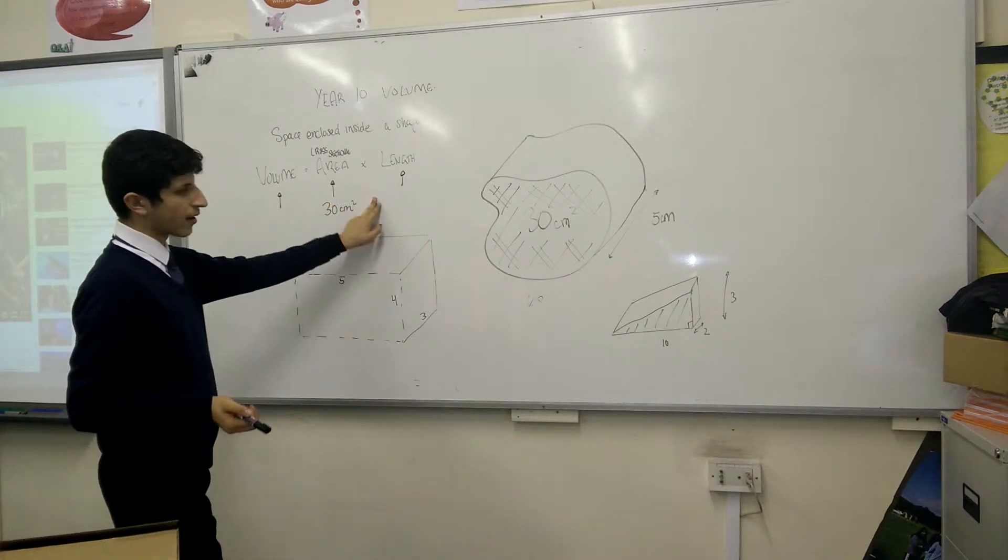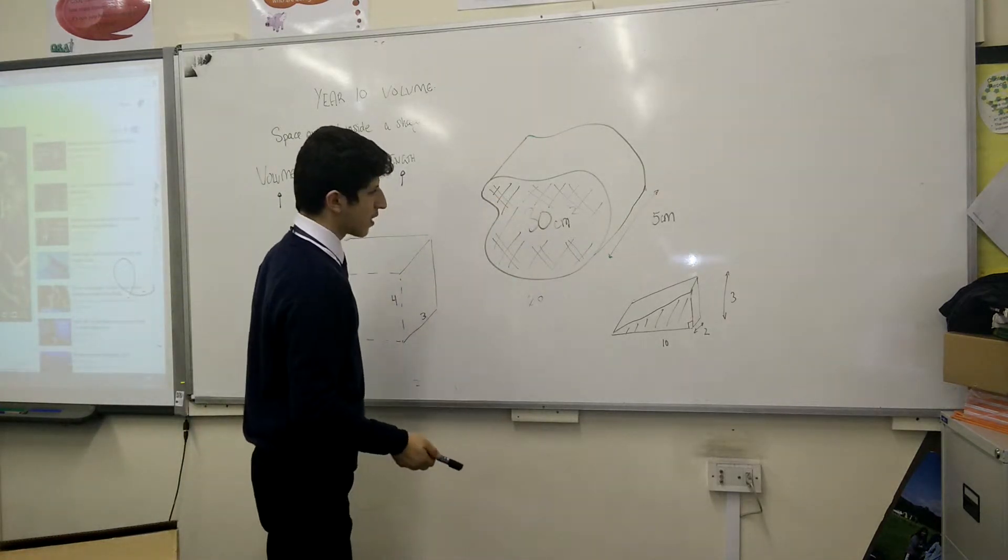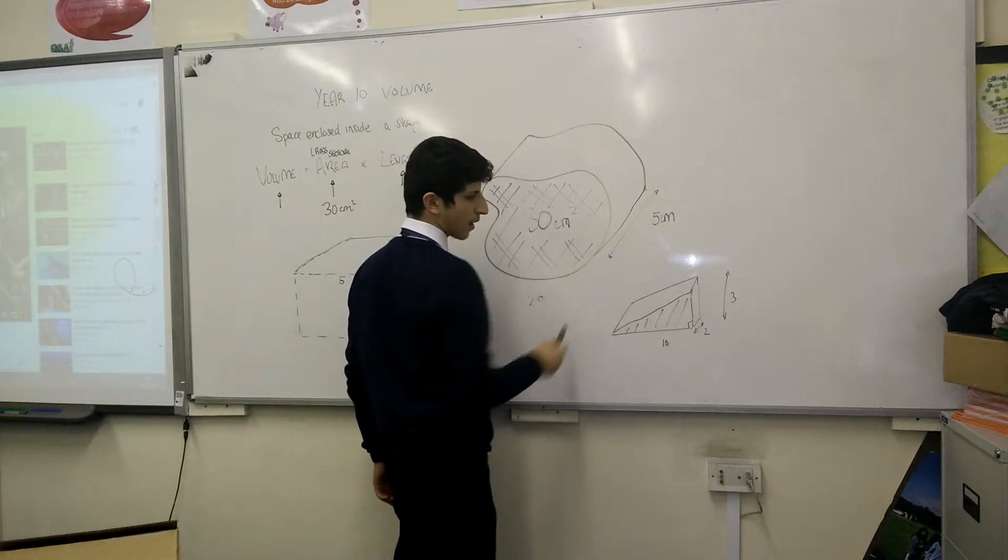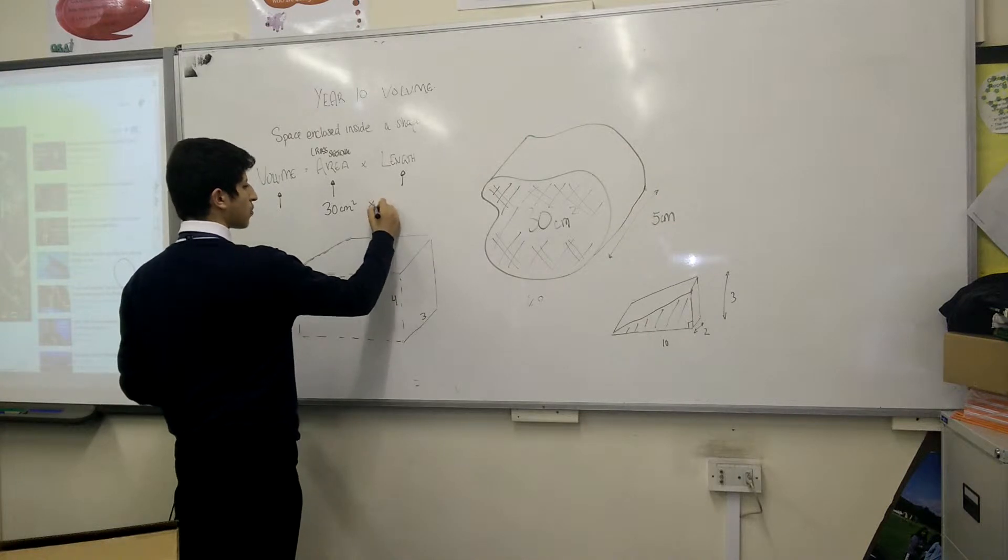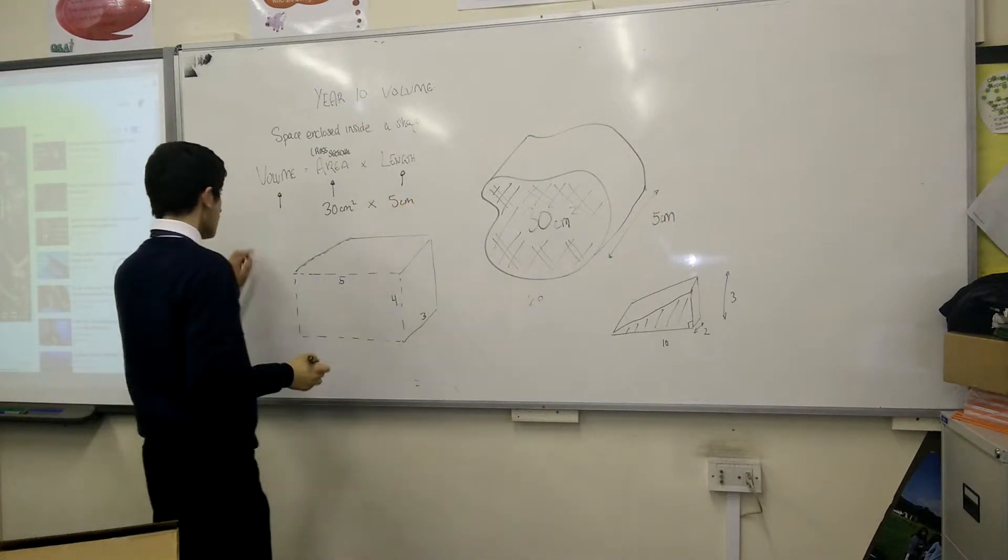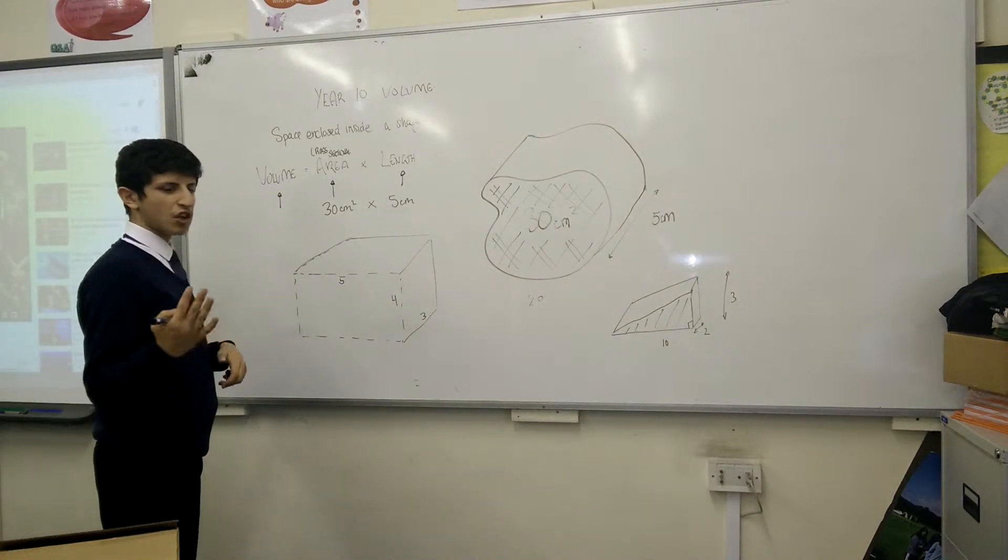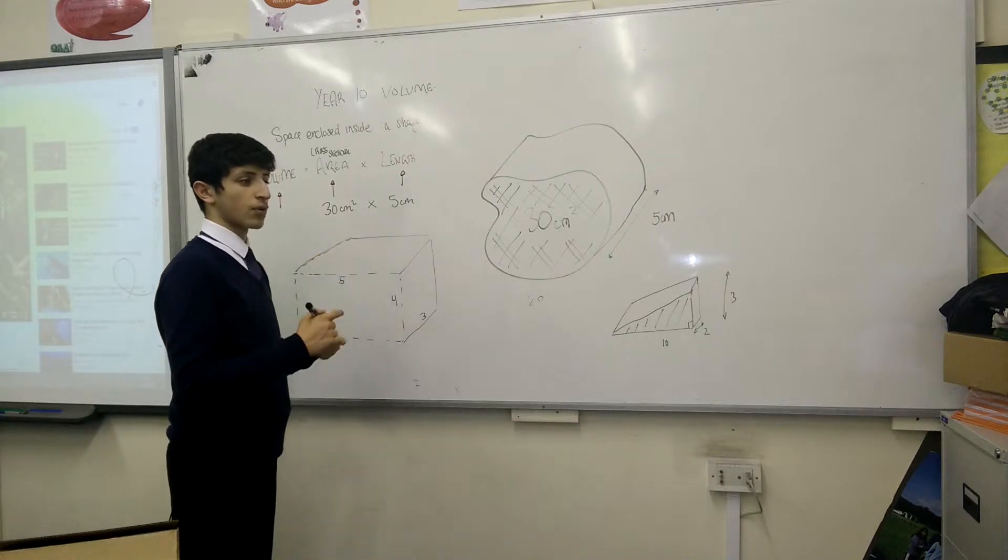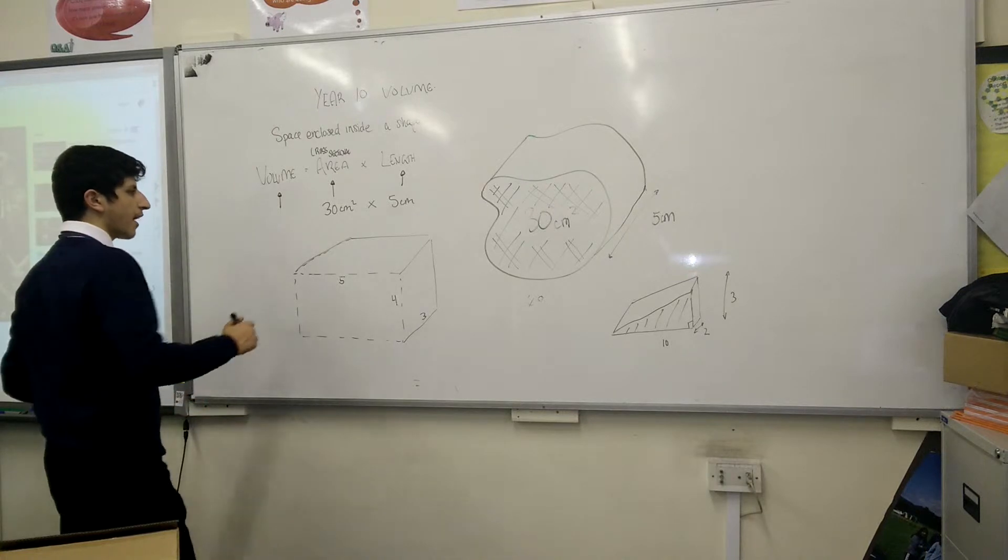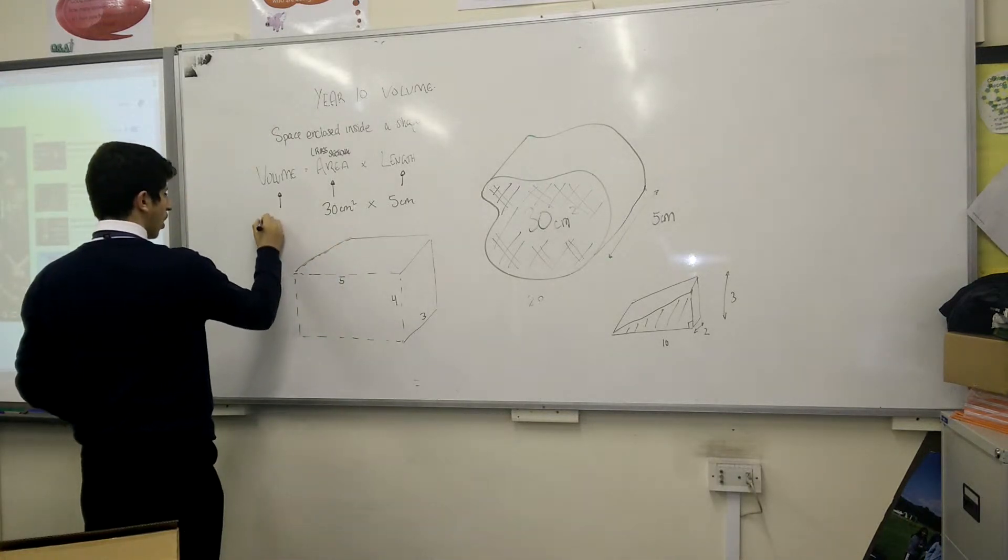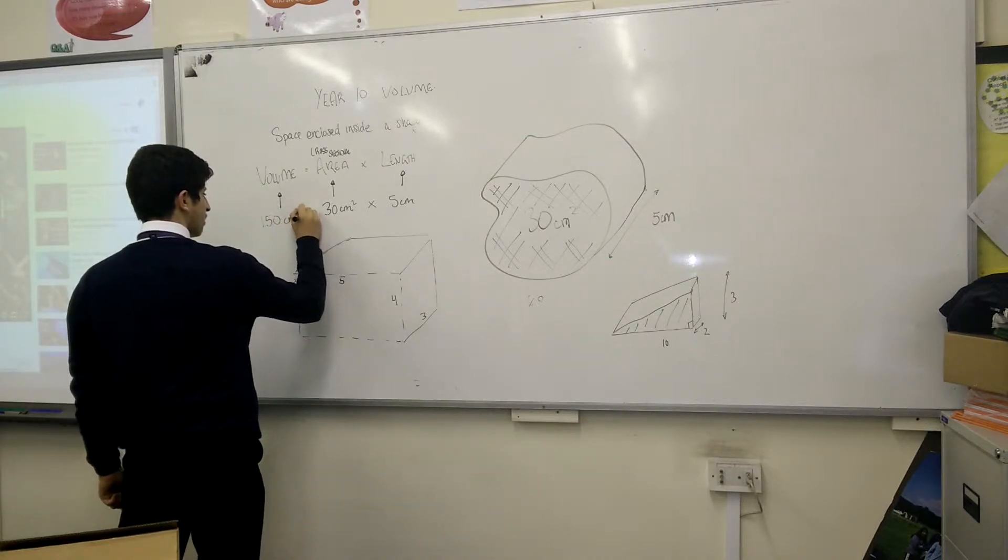You know that the volume is cross sectional area times length. If you have the cross sectional area here, there's 30 centimetres squared that's given to you. The length of the bread itself is given to be 5 centimetres. So what do you do? You get 30 centimetres squared and you multiply it by 5 centimetres. The unit of volume however is, in this case, centimetres cubed.